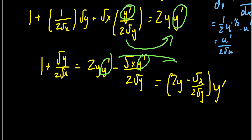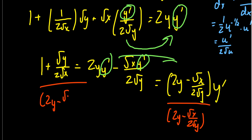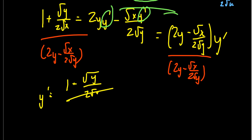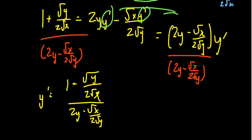To solve for y prime, we divide both sides by the coefficient of y prime, which is 2y minus the square root of x over 2 times the square root of y. So y prime equals 1 plus the square root of y over 2 times the square root of x, all over 2y minus the square root of x over 2 times the square root of y. Technically this is the derivative, but as noted, it's quite messy with fractions inside fractions, so let's try to clean that up.